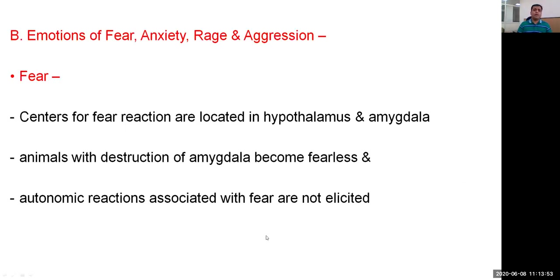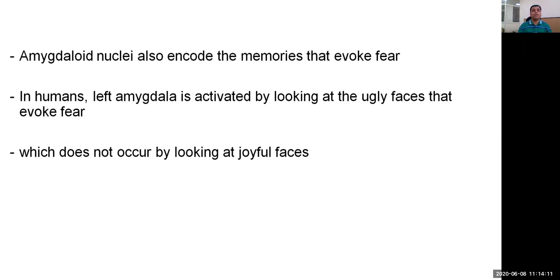The next function is emotions of fear, anxiety, rage, and aggression. Centers for the fear reaction are located in the hypothalamus and in the amygdala. Animals with destruction of the amygdala become fearless, and the autonomic reactions associated with fear are not elicited. Amygdaloid nuclei also encode memories that evoke fear. In humans, the left amygdala is activated by looking at frightening faces, which does not occur when looking at joyful faces.